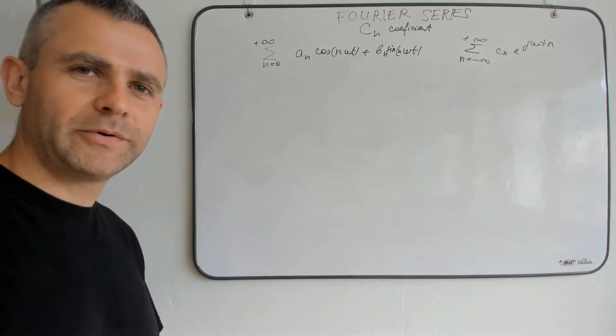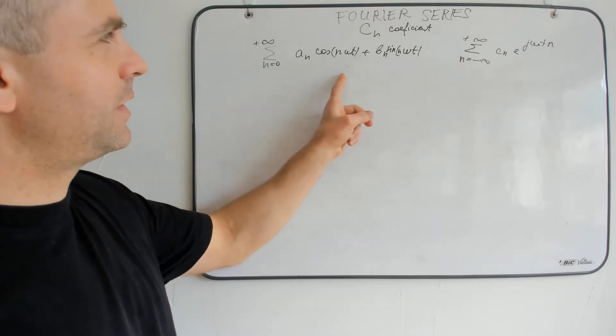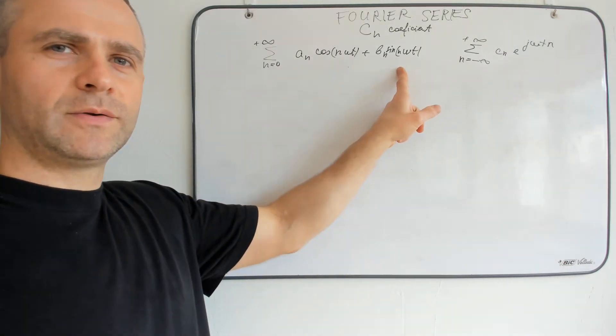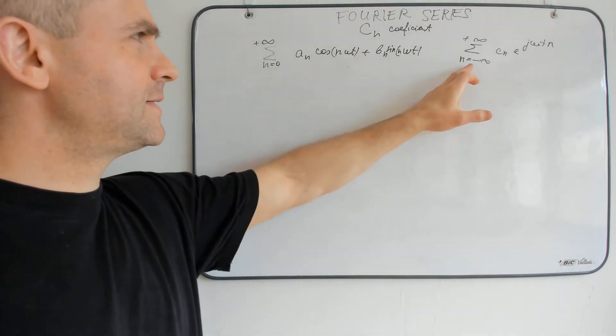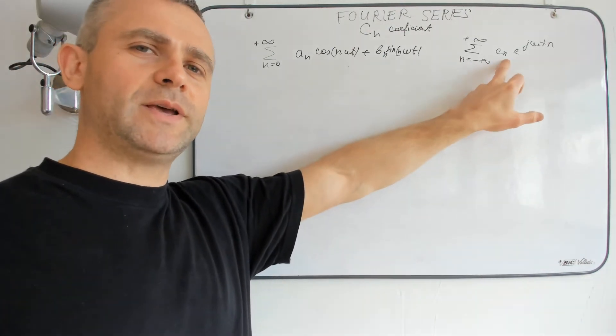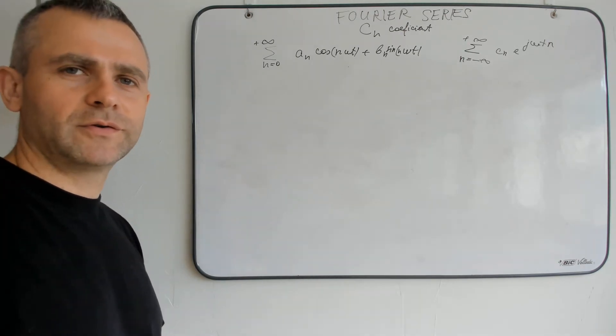Hi! In the previous video we saw how to get from trigonometric representation of Fourier series to the exponential one. Let's see what's the relation of Cn, which is the coefficient of Fourier series.